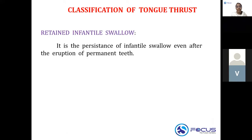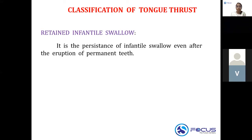Retained infantile swallow is the persistence of infantile swallow even after the eruption of permanent teeth. Of all swallow patterns, the one that causes the most complications and malocclusion is retained infantile swallow — it is the most problematic swallow pattern.